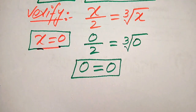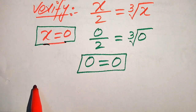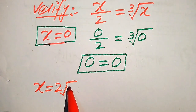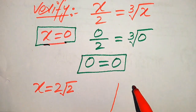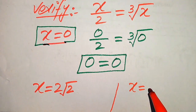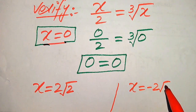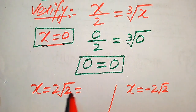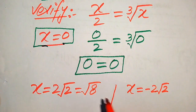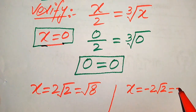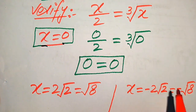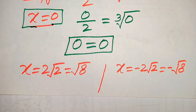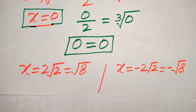Now we verify the other two roots. The positive value is 2 times square root of 2, and the negative value is minus 2 times square root of 2. Also, 2 times square root of 2 equals square root of 8, and the negative is minus square root of 8. We use these two forms as needed for verification.